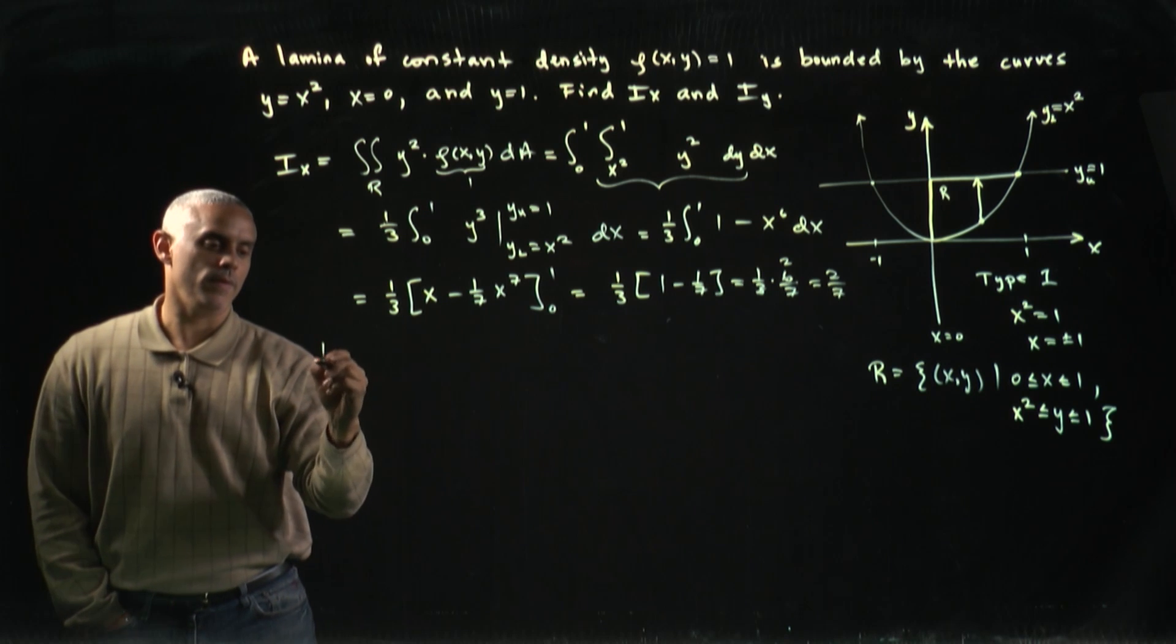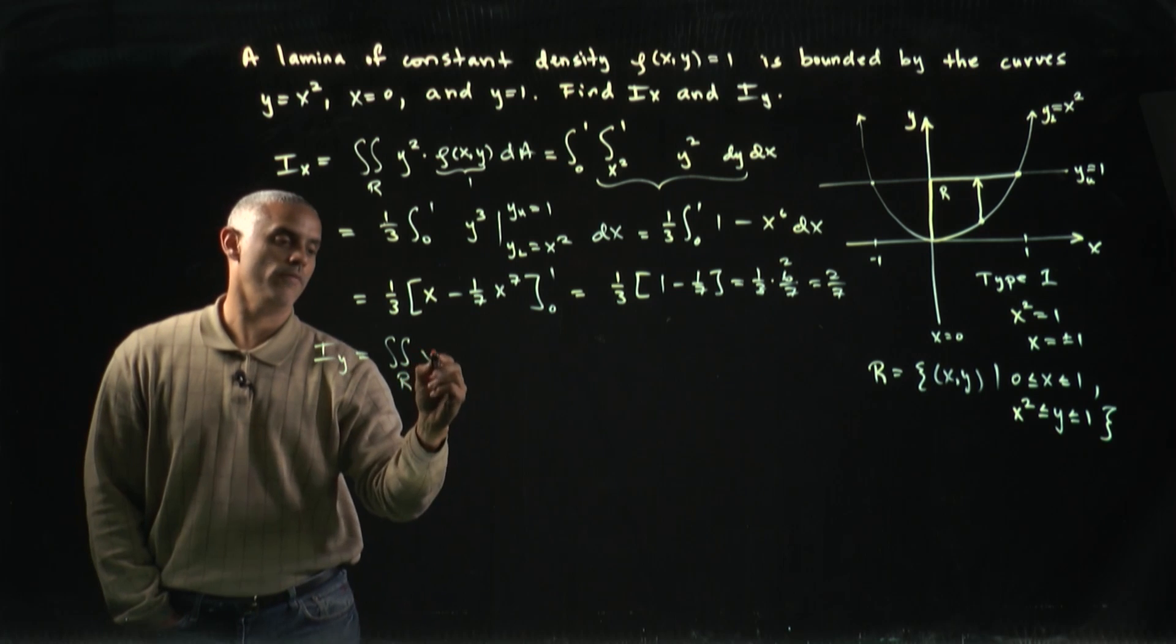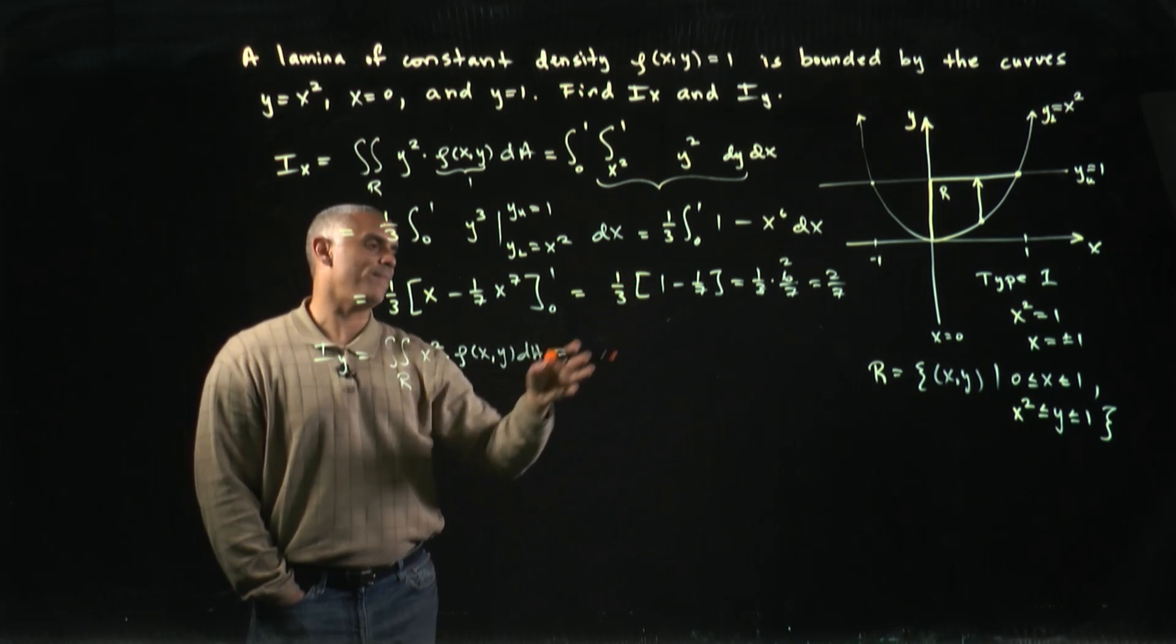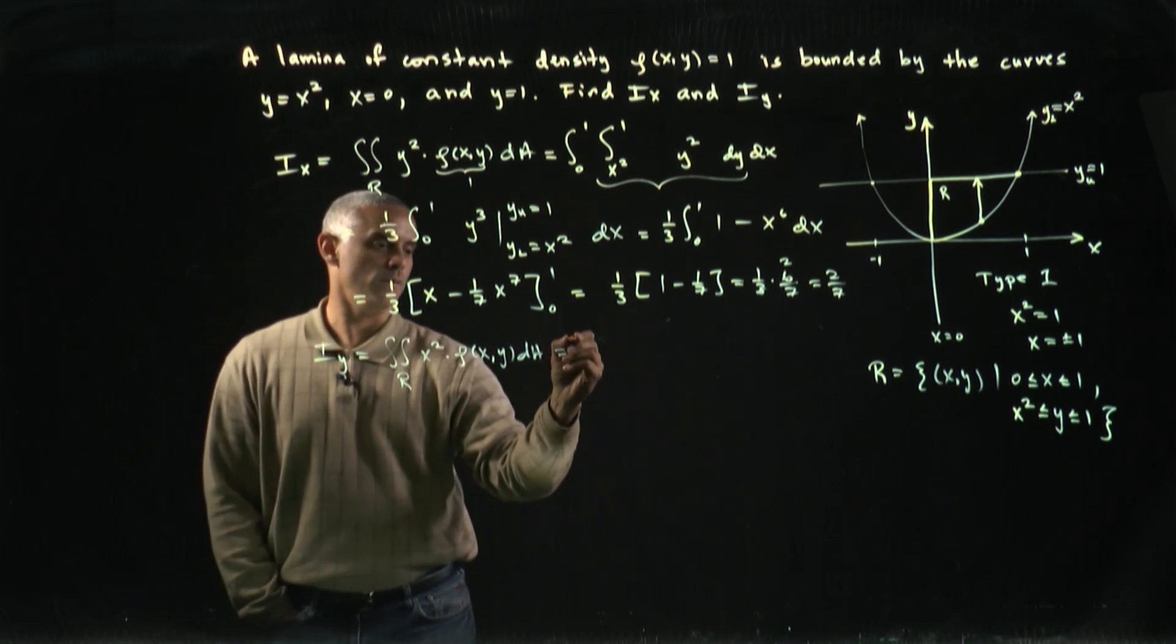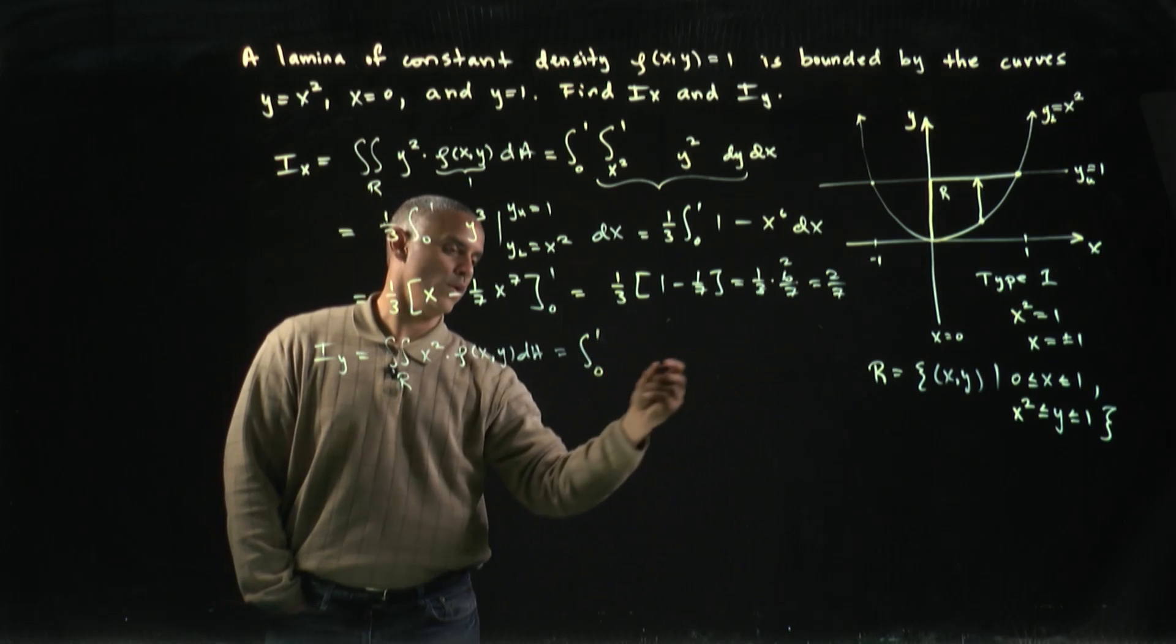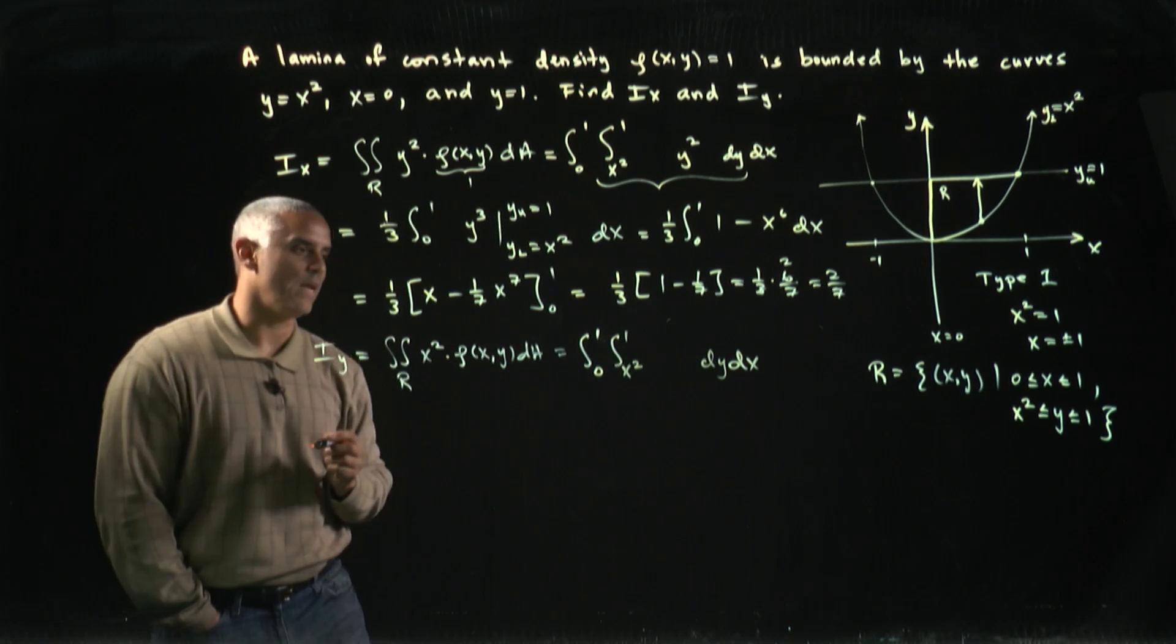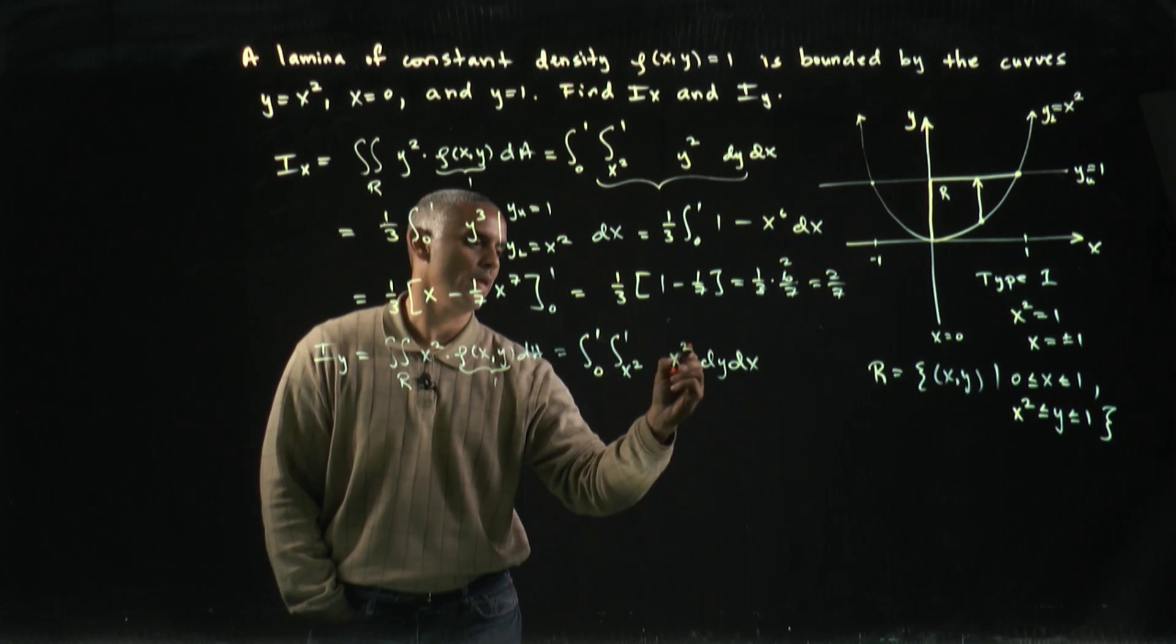If we find the moment of inertia about y, I get the double integral over R of x squared ρ(x,y) dA. Again, I've already mapped out my region R, so I'm ready to fill this in right away. This becomes the integral from 0 to 1 on x, so I'll throw a dx on the outside, x squared to 1 on y, dy on the inside, and here I have x squared times 1, which is just going to give me x squared.